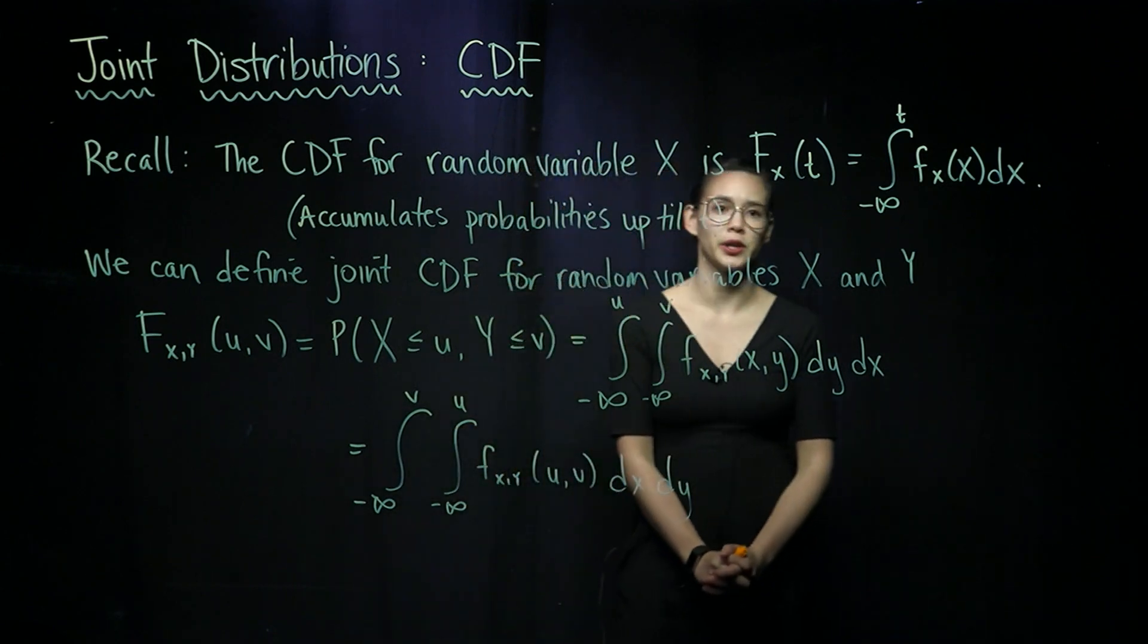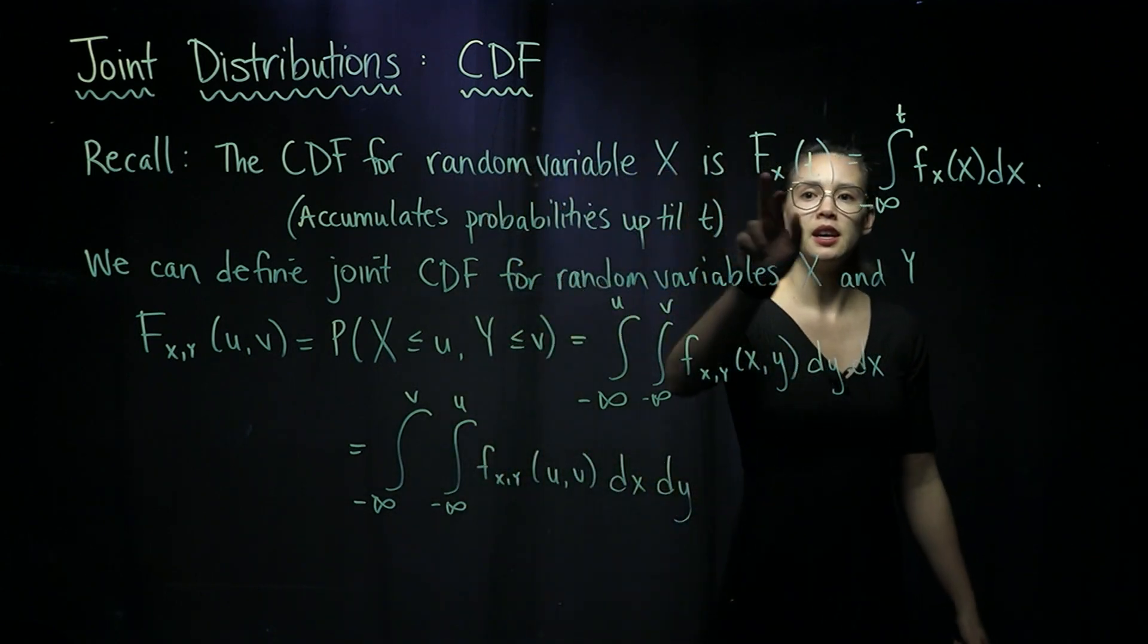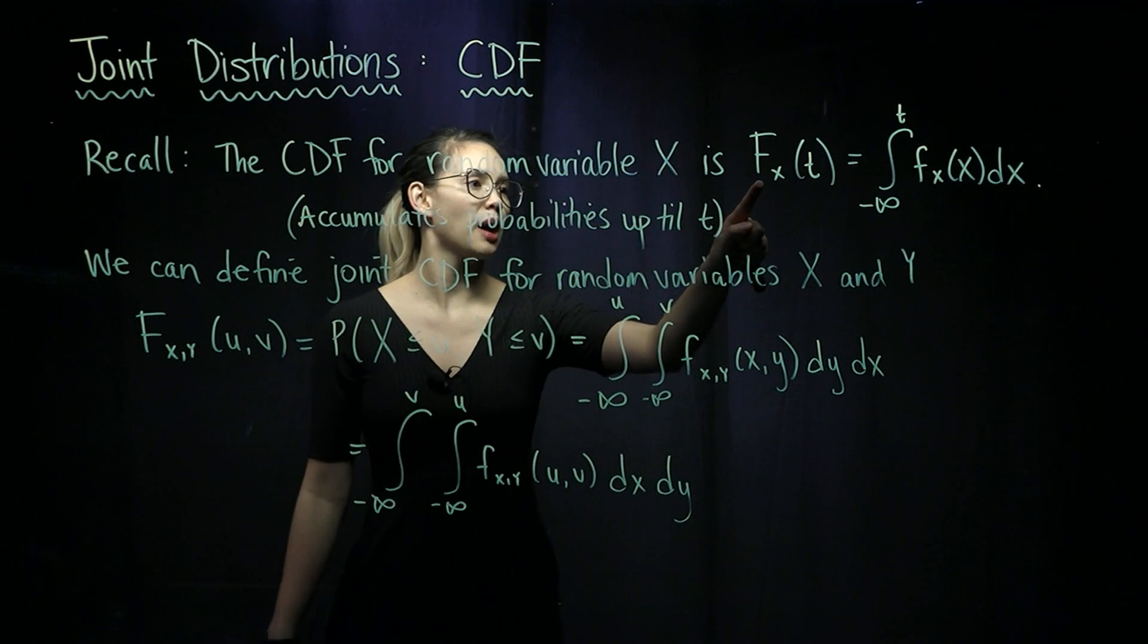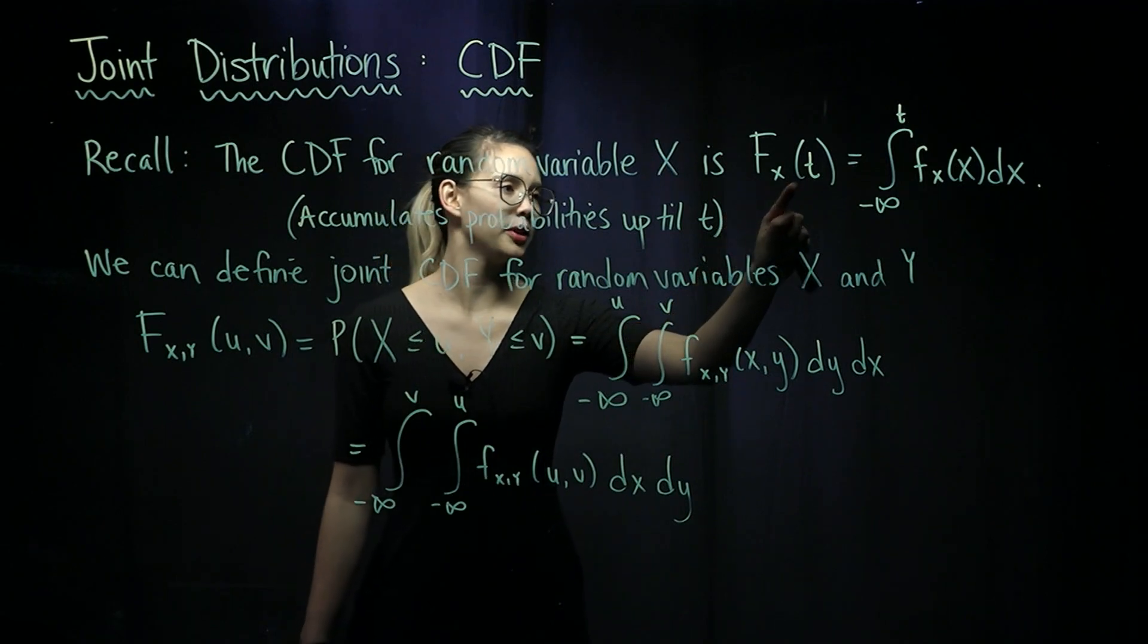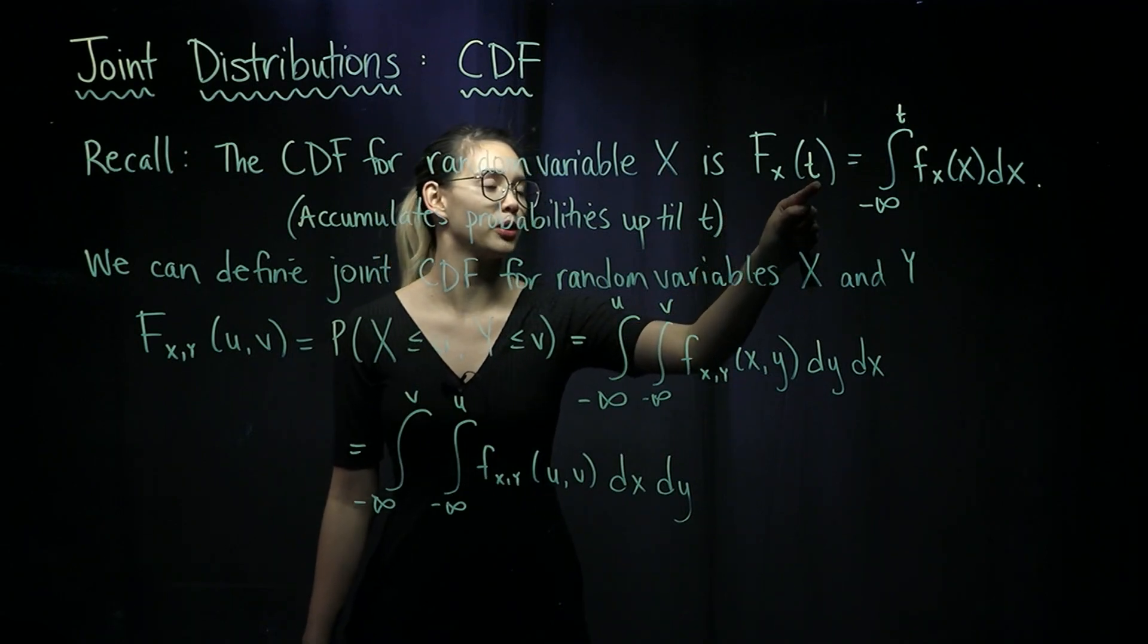As a reminder, the CDF for a single random variable X is usually written with a capital F, then here's a random variable, and then this is the point we're going to evaluate it at.